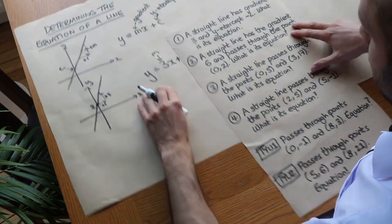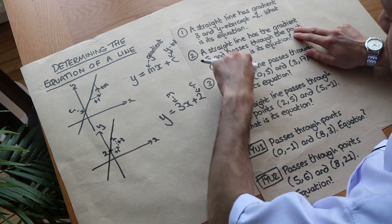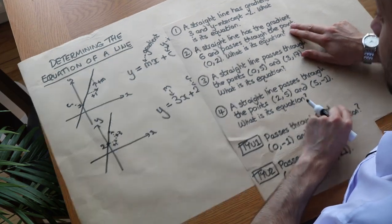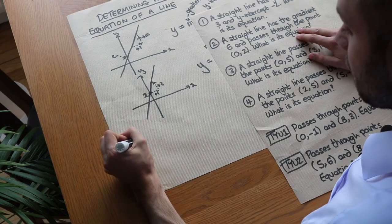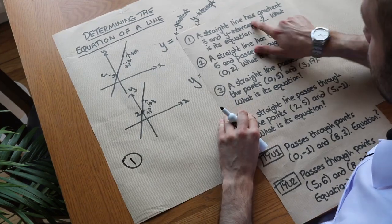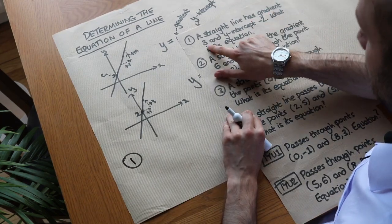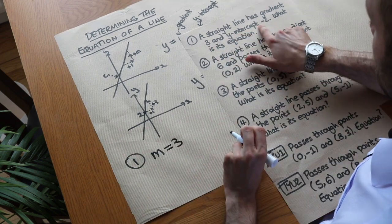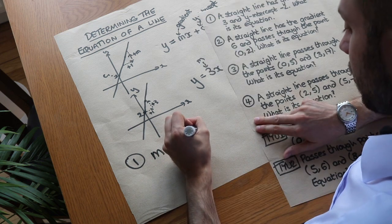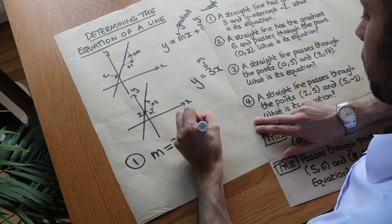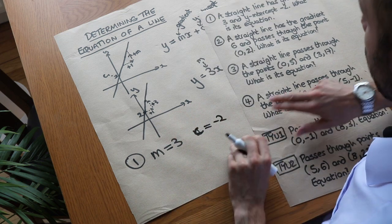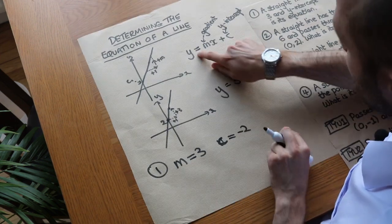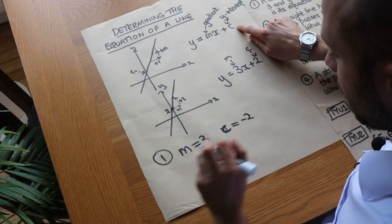We're going to use that to solve these questions, which become increasingly more difficult and use more skills as we go along. So let's do this first relatively simple one. We've got: a straight line has gradient 3, i.e. m equals 3, and the y-intercept is minus 2, so c equals minus 2. What is the equation of that straight line?